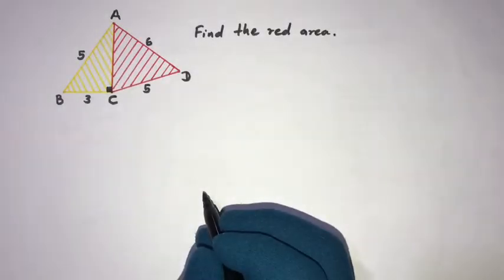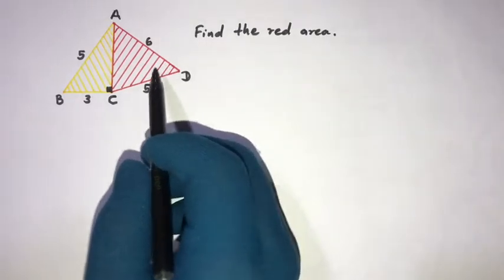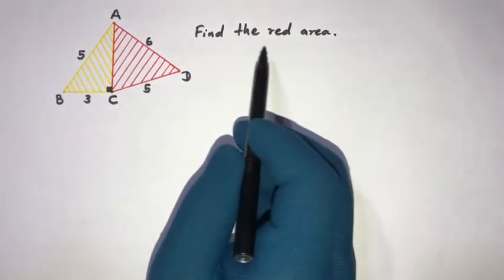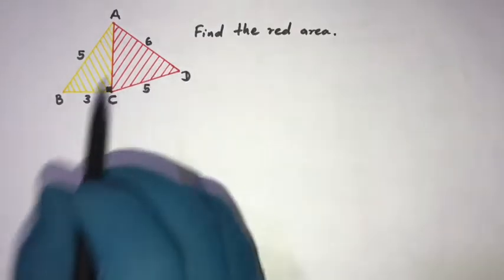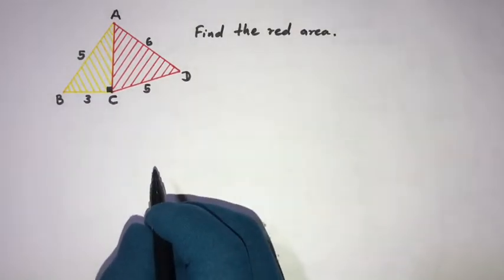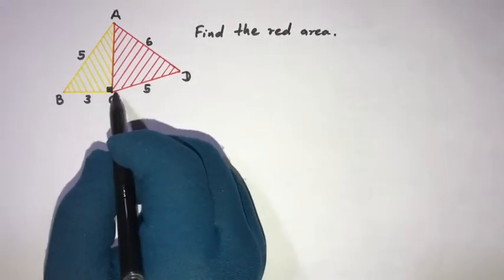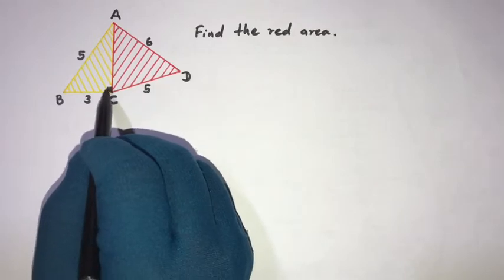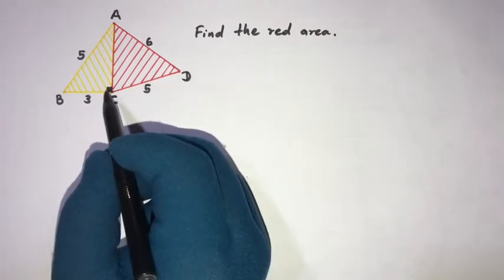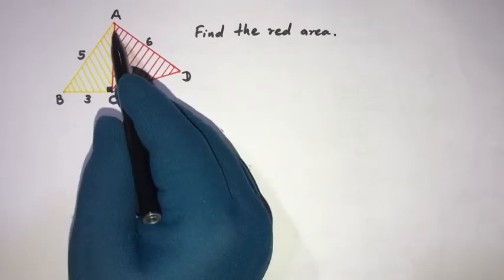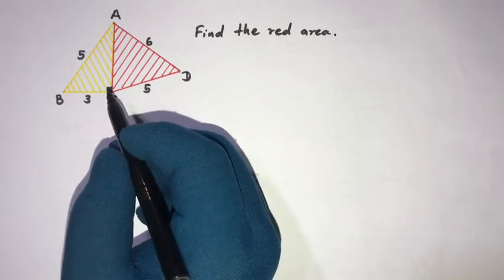Welcome to the Mathematics My Channel. Today we are going to solve this question: find the red area, or area of ACD. Can you solve this? Well, first we know ABC is a right triangle because angle C is 90 degrees. So we can evaluate the length of AC.